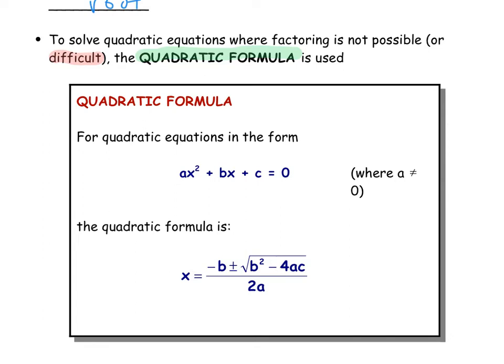Things we need to watch for: we need to make sure that we have our terms going in descending order of degrees. Our squared term goes first, our linear term goes second, and our constant term last. The other side of the equation, as we saw when solving by factoring, should always be zero.